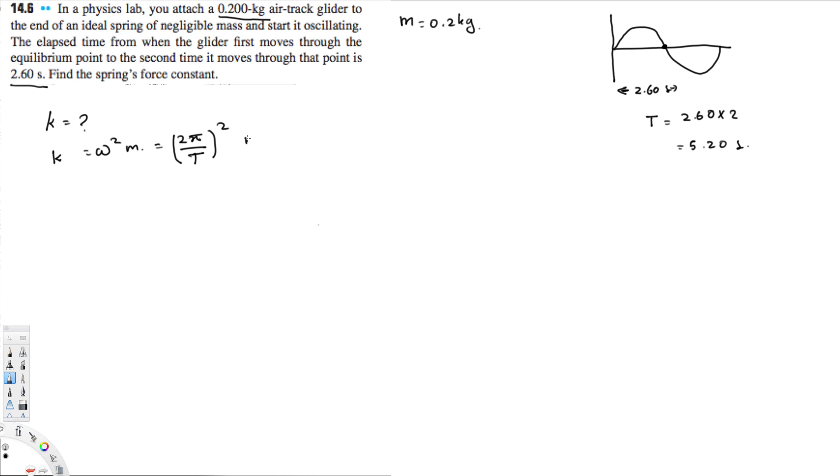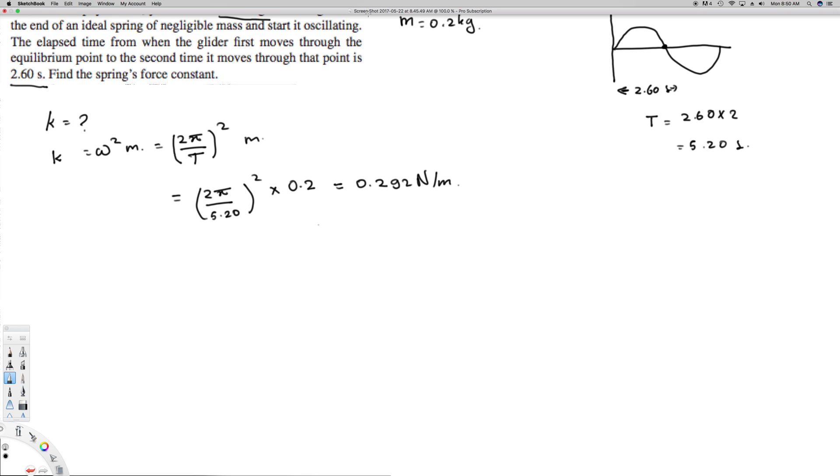Now we have all the information. We can simply substitute all the values and find the final answer. So 2π divided by 5.20, squared, times the mass, that is 0.2 kilogram, and that gives us 0.292 Newton per meter. And that is the final answer for this question. I hope you guys liked this video, see you next time.